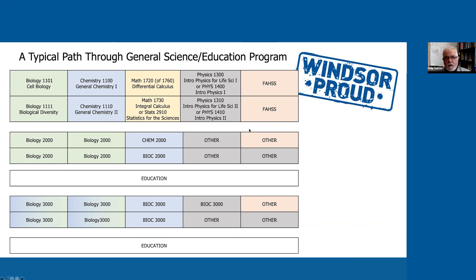In the second year, students take second-year biology courses and second-year chemistry courses. Most students will take organic chemistry — that's Chem 2300 — and that gives them entry to a biochemistry course in the second term of second year, which then gives them entry to third-year biochem courses. A lot of students choose to do that kind of route in the General Science program.